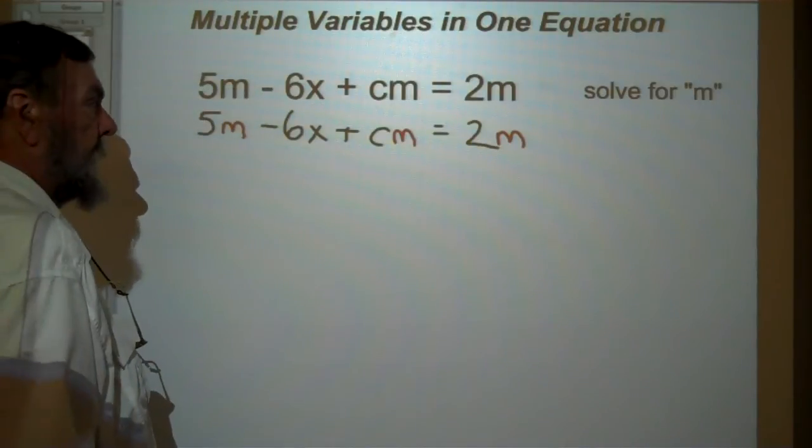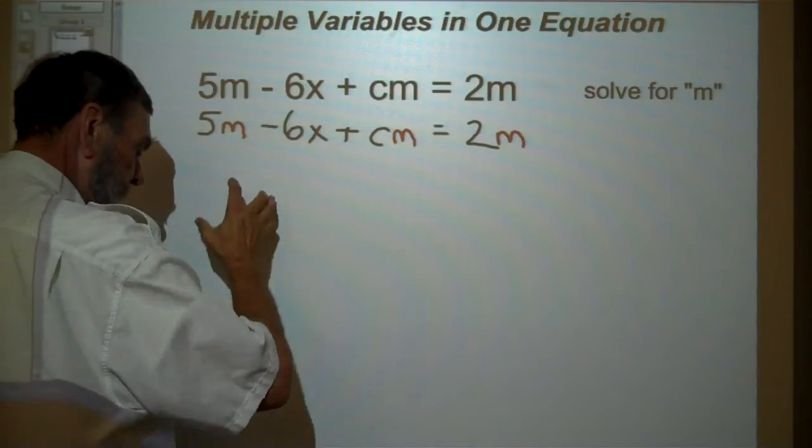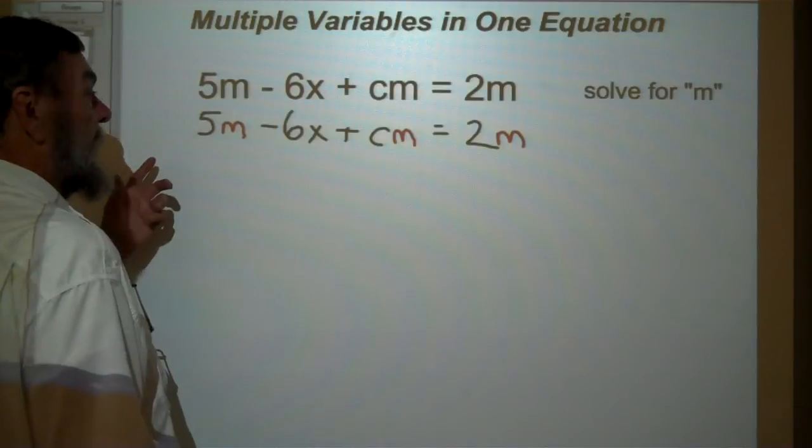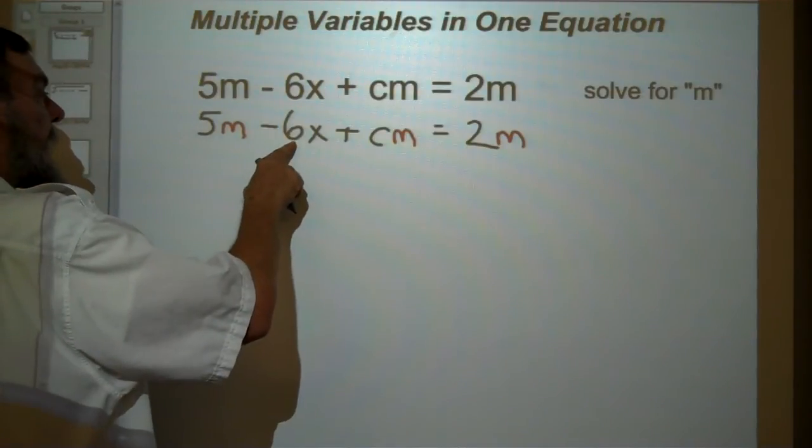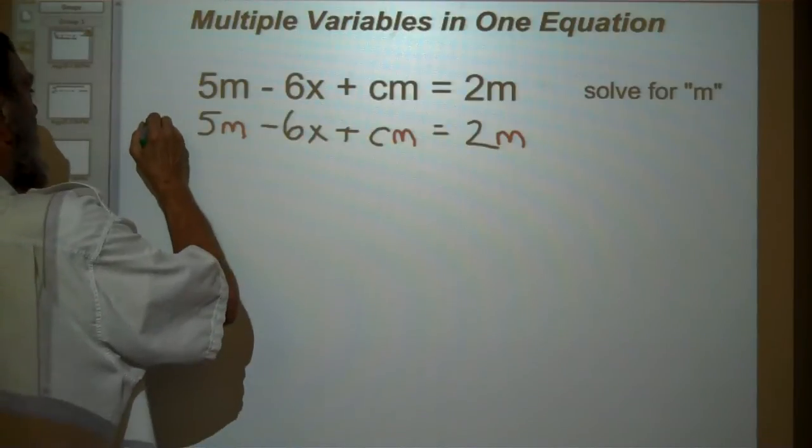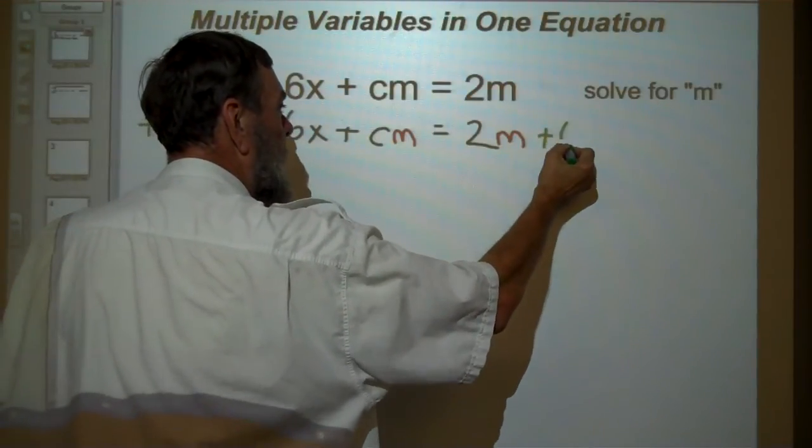The trick is, take everything that has an m on it and get it on one side. Everything that doesn't have an m to the other. So what do we start with? 6x doesn't have an m. So let's add 6x to both sides.